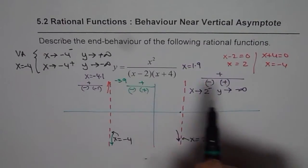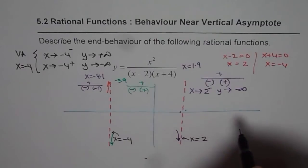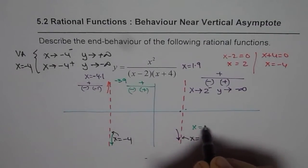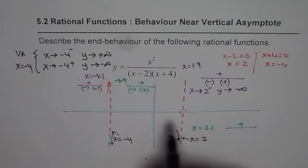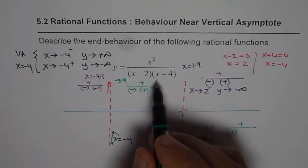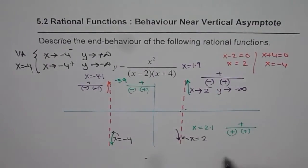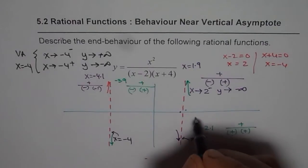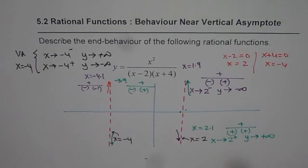Now consider a point on the right side of x equals 2, say x equals 2.1. The numerator is positive. In the denominator, 2.1 minus 2 is positive, and 2.1 plus 4 is also positive. So everything is positive and the function approaches positive infinity. We write: as x approaches 2 from the positive side, y approaches positive infinity. That is the behavior near the vertical asymptotes.